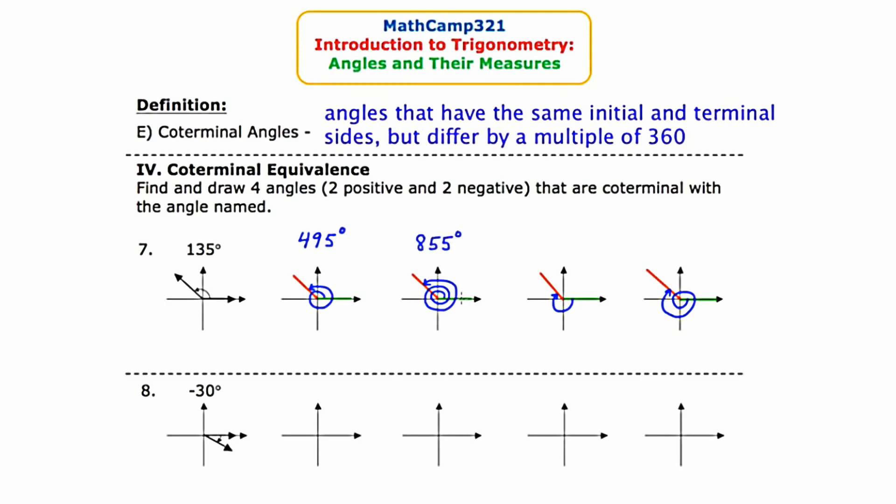Now to figure out the negative angle, I'm going to start with 135 and subtract 360. This gets me negative 225. And for my fourth case, I'm going to go back to my home base of 135, but this time I'm going to subtract 720. And when I do this, I get negative 585.